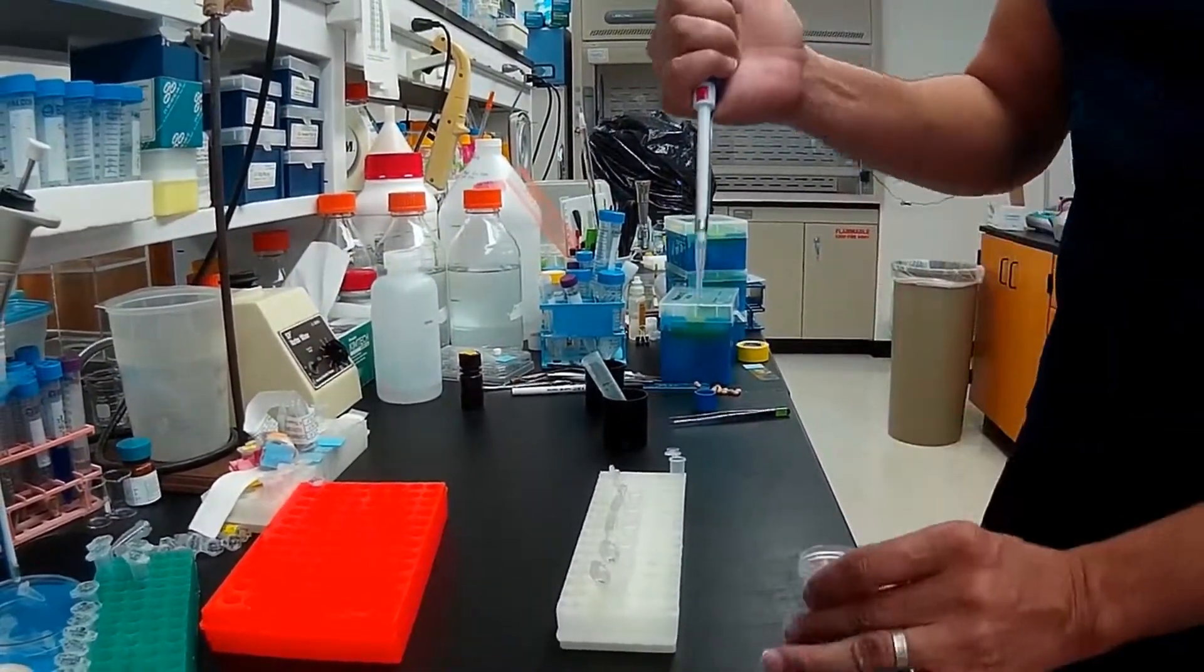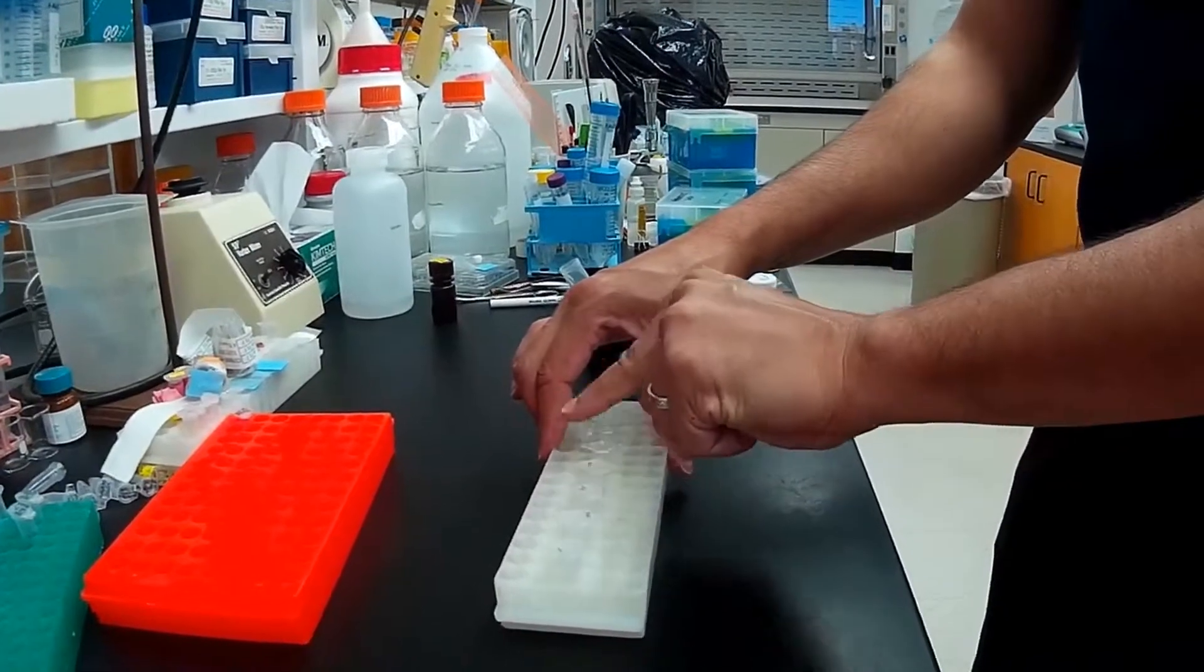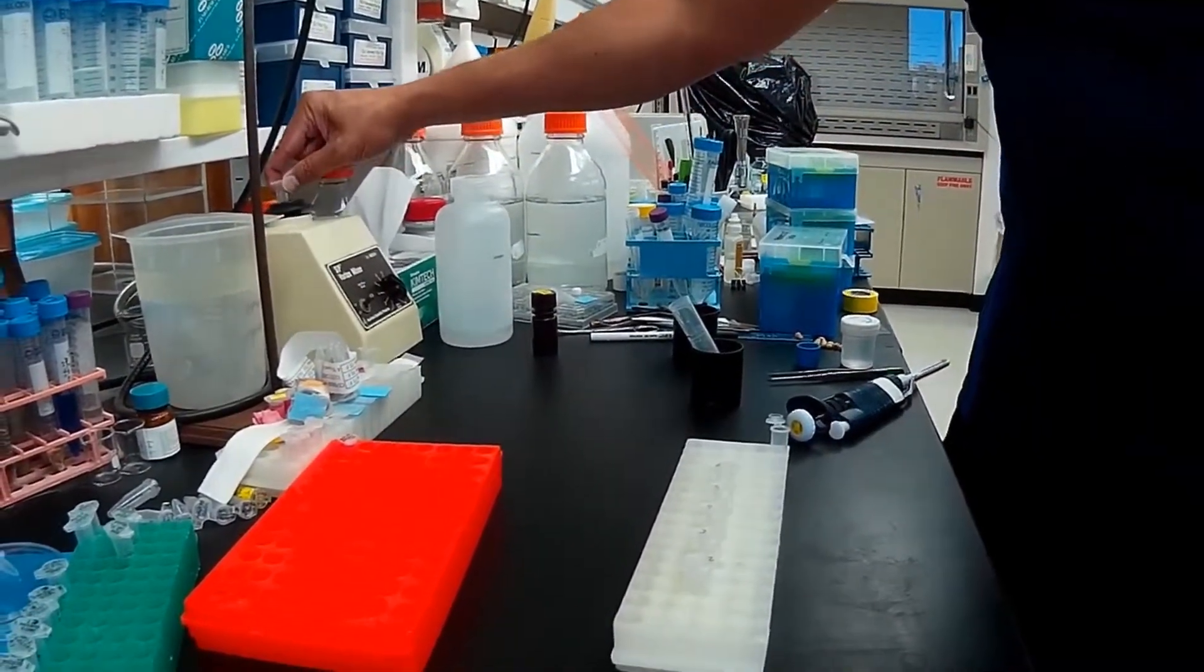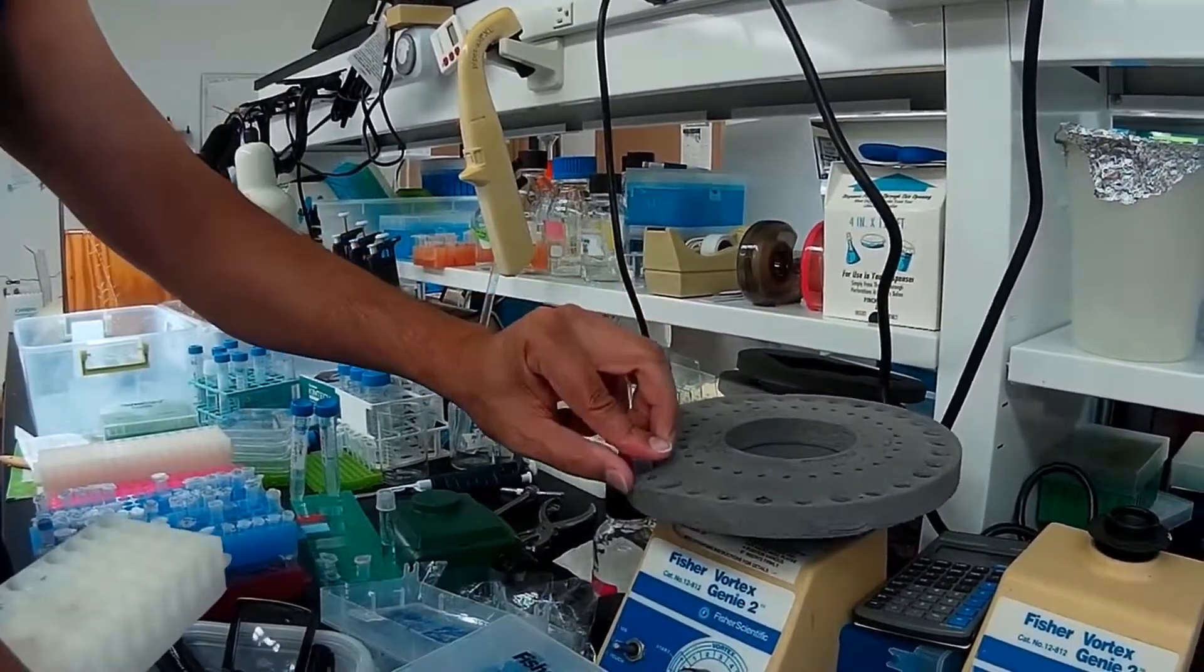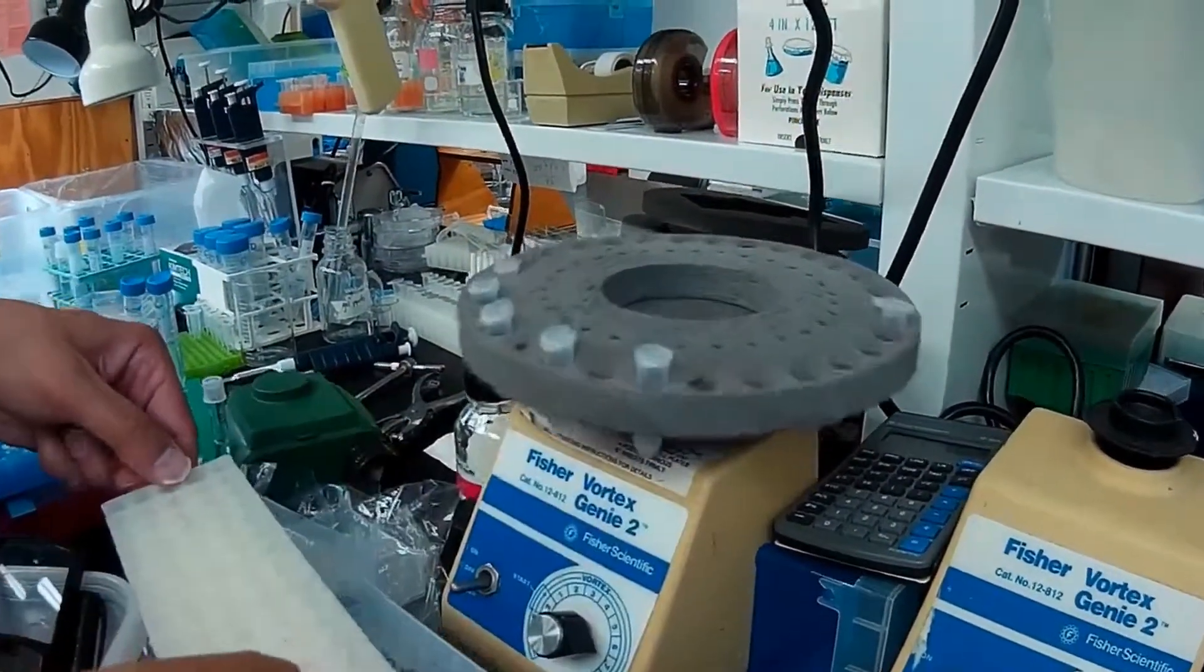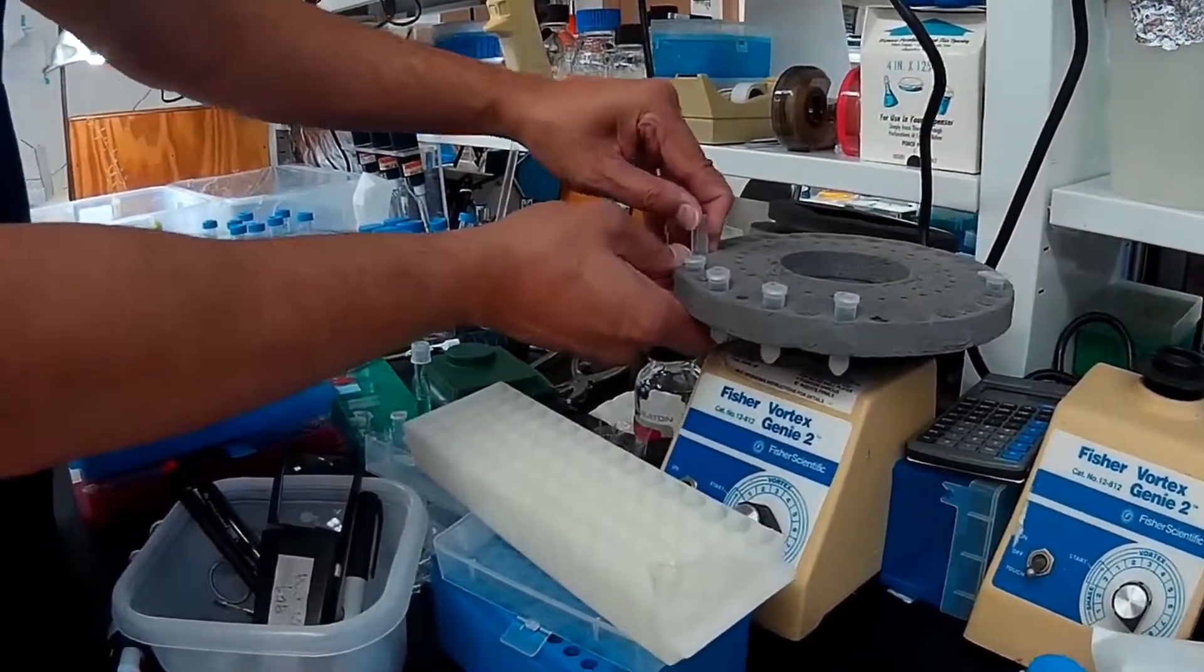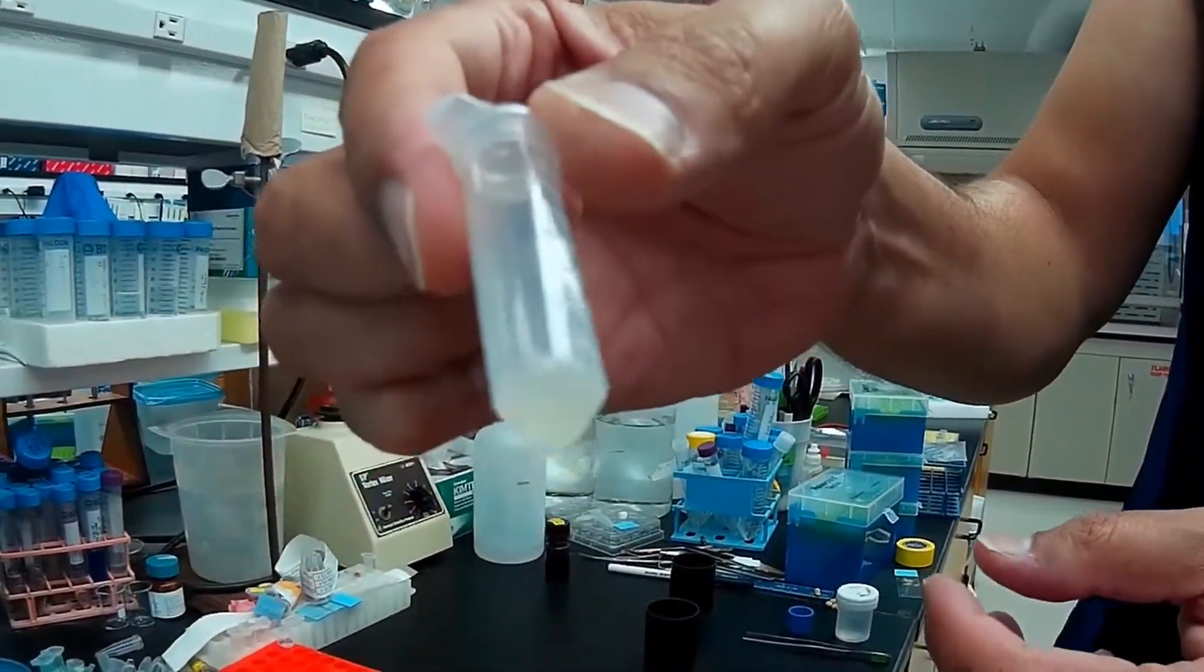100 microliters of solution one is then added to the E. coli pellets. The bacteria can be re-suspended by vortexing or pipetting. Here I'm showing the use of a multi-vortexer. It is very important that the pellet is completely re-suspended if you want to get maximum DNA yield. You can see there's no more chunks of E. coli.